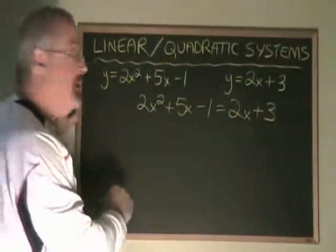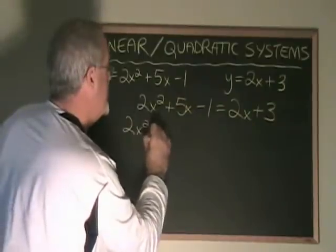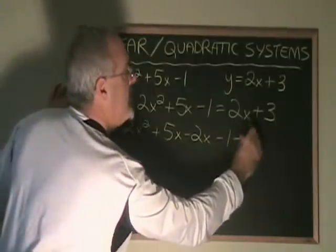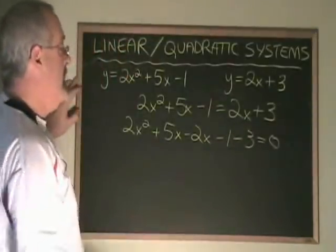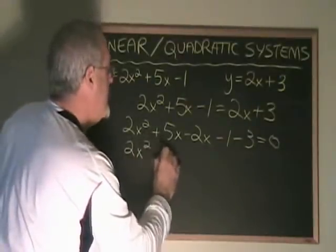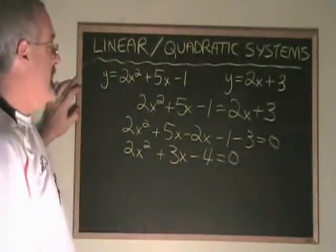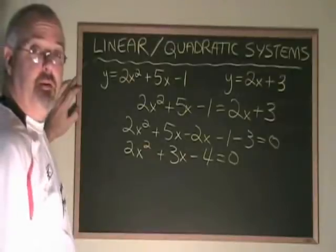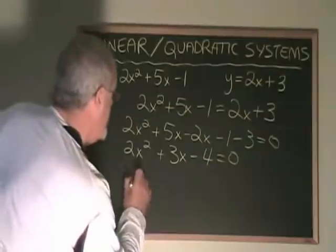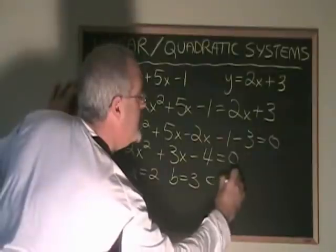Moving everything to the left side of the equal sign, I have 2x squared plus 5x minus 2x minus 1 minus 3 equals 0. Simplifying, 2x squared plus 3x minus 4 equals 0. This expression is not factorable, so I have to use the quadratic formula.